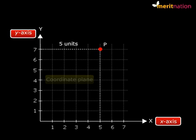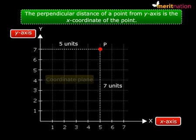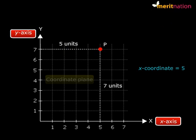Now let me draw two lines there. And what is the length of these two lines? Five units and seven units. Now the perpendicular distance of a point from the y-axis is the x-coordinate of the point. So what is the x-coordinate of the point here? You can see that point P is at a distance of five units from the y-axis. So this means that the x-coordinate of point P is five.